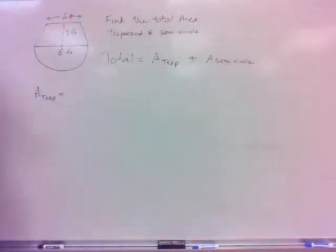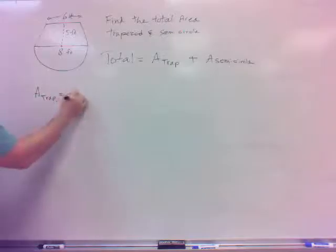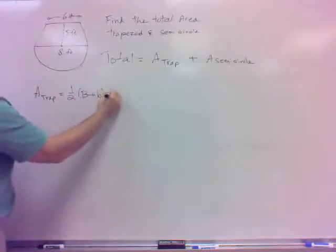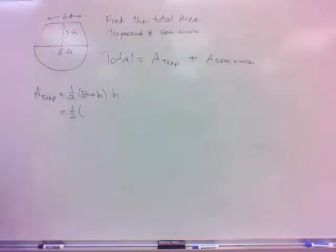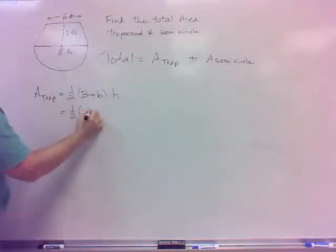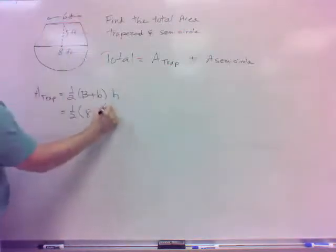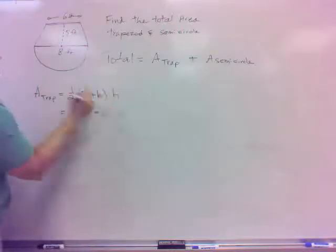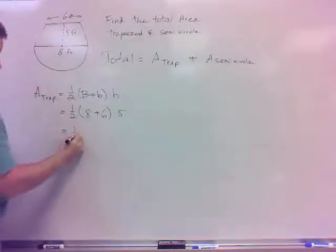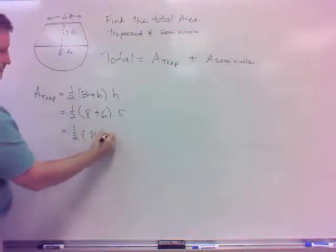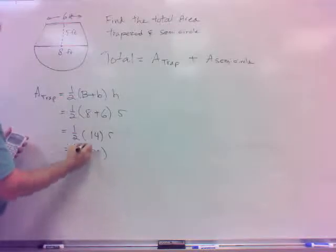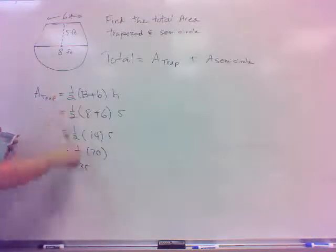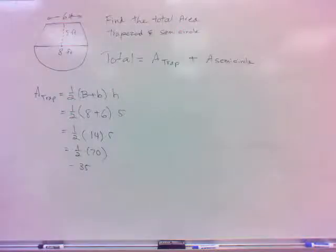Okay, I did one earlier. Trapezoid formula. What is it? One half, big B plus little b times h. So that would be one half. The big B is the length across there, so that's 8. The little b is the length across there, so that's 6. And then the height is there, so that's 5. So it's a half times 14 times 5. 14 times 5 is 70. So it's half of 70, which is 35. So the trapezoid area, 35, is that okay?